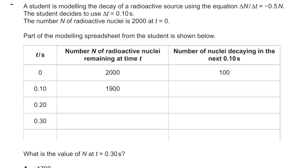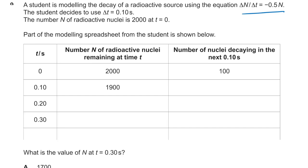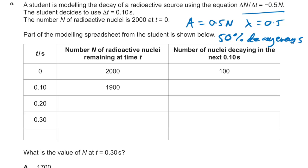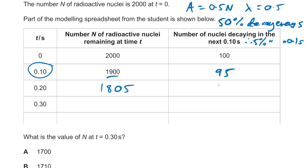Question nine: a model of radioactive decay with ΔN/Δt = −0.5N. The rate of decay is activity, so A = 0.5N, meaning the decay constant λ = 0.5 per second — 50% decays each second, so 5% decays every 0.1 seconds. Starting at 1900, after one step that's 95 decaying → 1805; 5% of that is ~90 → 1715. The answer is C.